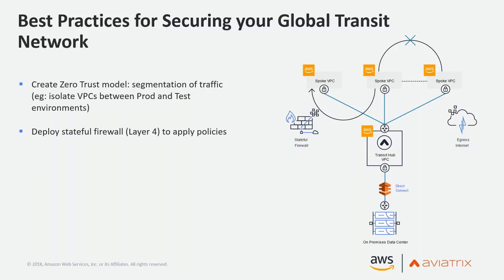The second security best practice is the ability to deploy a stateful firewall as part of your networking solution. Best practices require rules like a database should only communicate with select applications — source, destination, port, protocol, allow/deny four-tuple rules. Your transit architecture should give you the facility to define these stateful firewall functions.